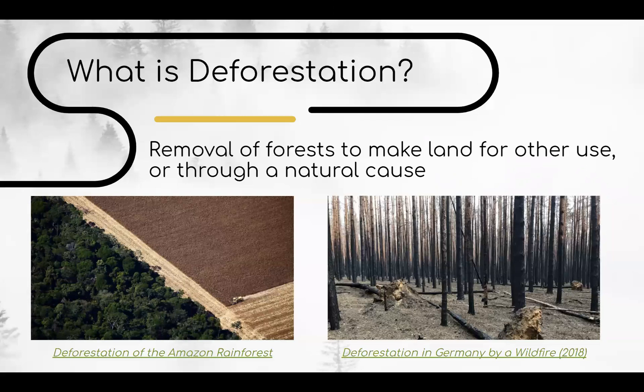First of all, what exactly is deforestation? In simple terms, it's the removal or destruction of forests to make land for other purposes, or from some natural cause. For example, on the left, we have deforestation in the Amazon rainforest — judging by how neat it is, it's likely caused by people cutting down trees. And on the right, this is the aftermath of a wildfire in Germany in 2018, which would be the destruction of a forest through natural causes — in this case, fire.